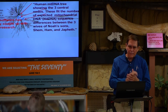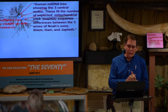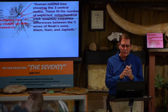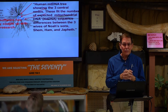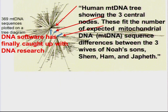This shows three central nodes. Quote: these fit the number of expected mitochondrial DNA sequence differences between the three wives of Noah's sons — Shem, Ham, and Japheth. And these women, incidentally, were only eight base pairs different from each other, so they were probably sisters or first cousins.